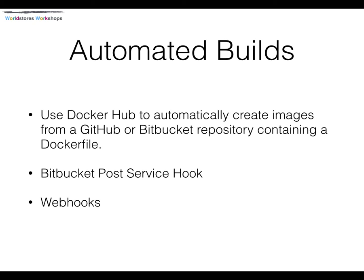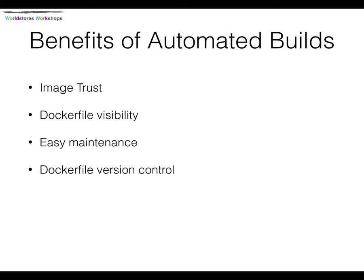The benefits of automated builds: with an automated build you have your image on Docker Hub and you immediately have trust in that image, because you can see exactly how that image was built up. If you just have a random image hosted on Docker Hub, you don't know all of the steps and processes that were used to create it. If it's an automated build, you can examine exactly how that image was built. The Dockerfile is there within Docker Hub, clear for you to see and follow.